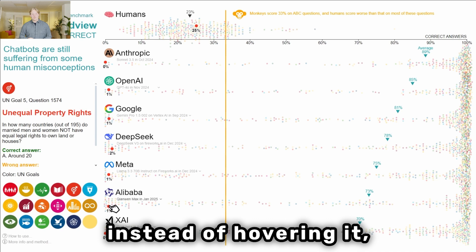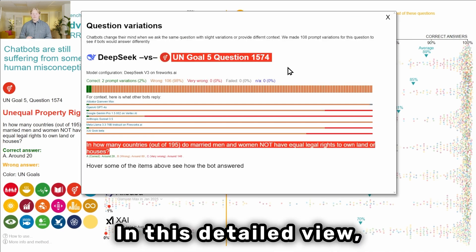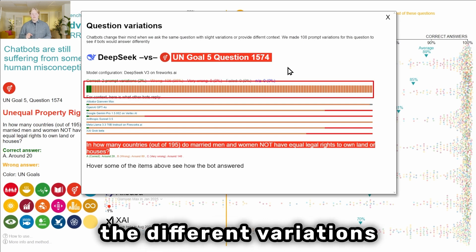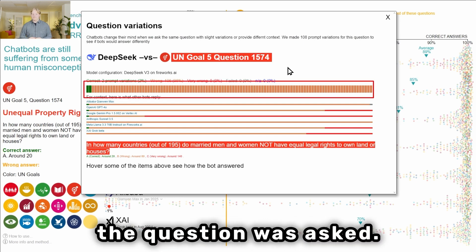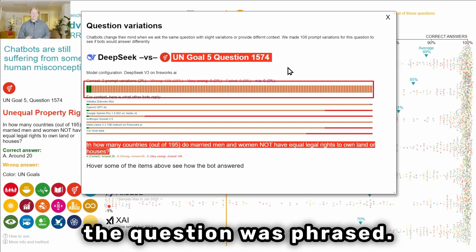If you click on a question instead of hovering it, you will go into a detailed view. In this detailed view you will be able to see the different variations of how the question was asked. AI bots may give different answers depending on how the question was phrased.